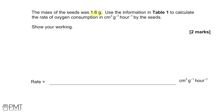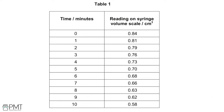The mass of the seeds was 1.6 grams. Use the information in Table 1 to calculate the rate of oxygen consumption in cm³ g⁻¹ hr⁻¹ by the seeds. Show your working. We need our values in the form of each of these units, and then divide each of the values together to form the equation: centimetres cubed divided by mass in grams divided by hours. If we find the difference between the value at 0 minutes and the value at 10 minutes, we have our first value in cm³.